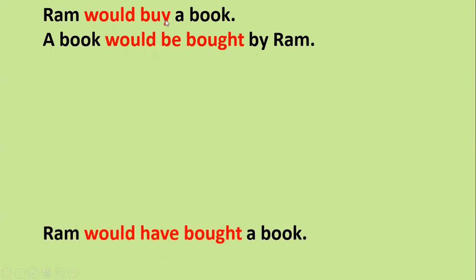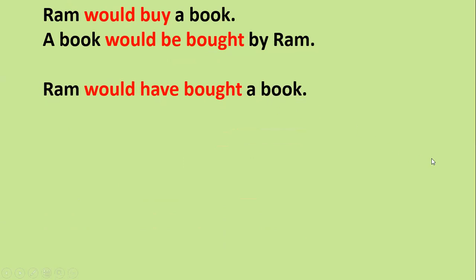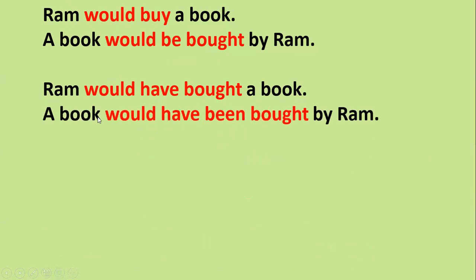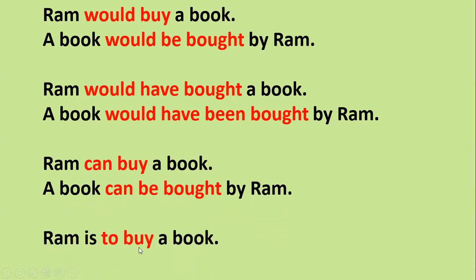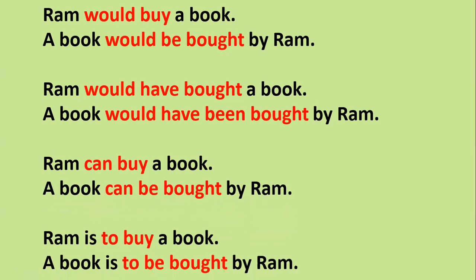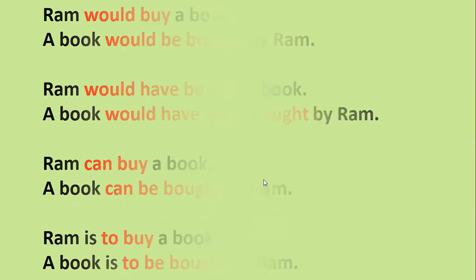For perfect conditional: 'Ram would have bought a book.' The passive is: 'A book would have been bought by Ram.' When you get modal verbs — can, may, might, could — the passive is: 'A book can/may/might be bought.' For infinitive — 'Ram is to buy a book' — the passive is: 'A book is to be bought by Ram'.